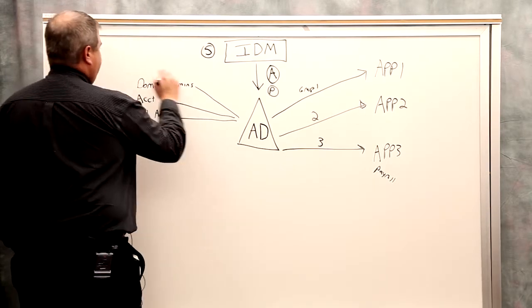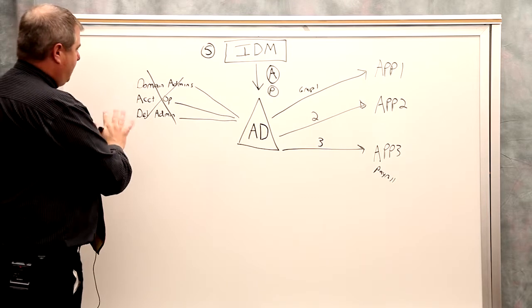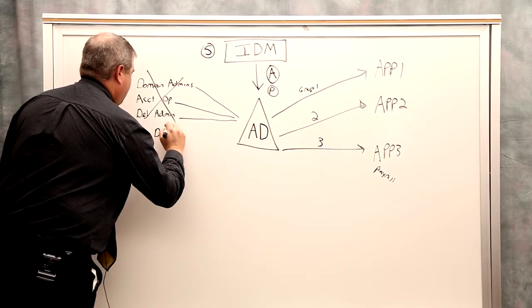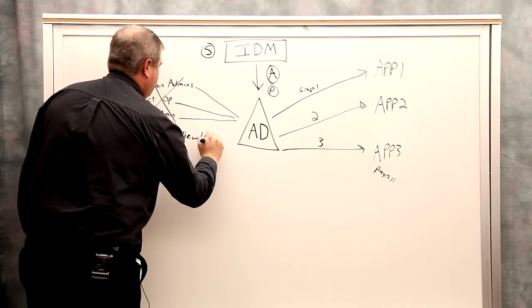So what DRA is all about is removing people from these high privileged accounts or high privilege group memberships and delegating exactly the view and tasks that you want them to be able to perform.